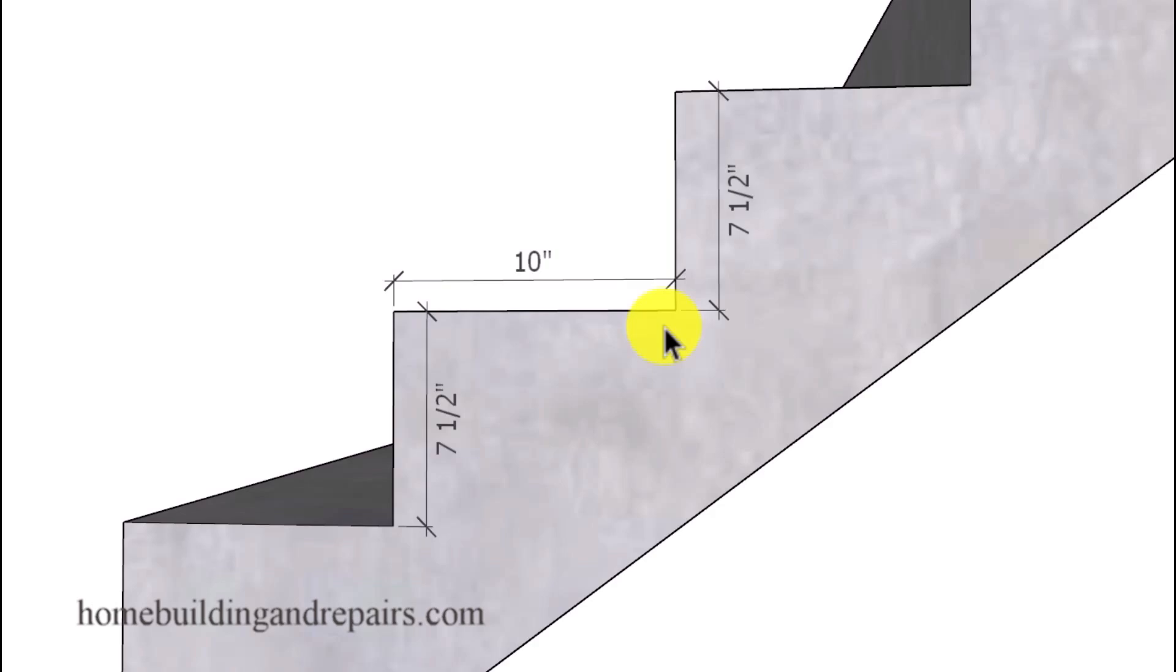For those of you who have watched my channel for a long time, you might have seen the 17 and a half inch rule. That would be when you add the depth of the tread to the height of the riser.